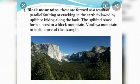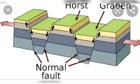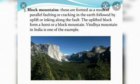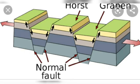The next category is block mountains. While fold mountains are caused by compressional forces, block mountains are caused by tensional forces, also known as stress forces of the earth. This stress leads to cracks on the surface of the earth. A block of higher land is left standing between two areas of lower land, and that highland is known as a block mountain or horst. The best example is the Vosges and the Black Forest mountains.